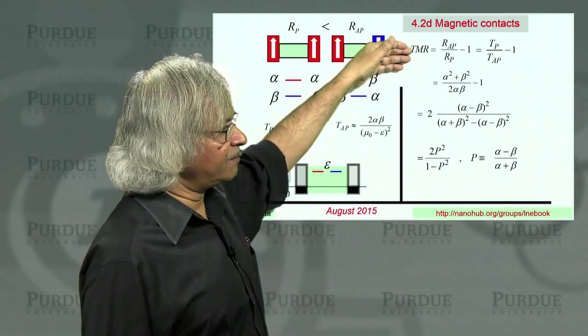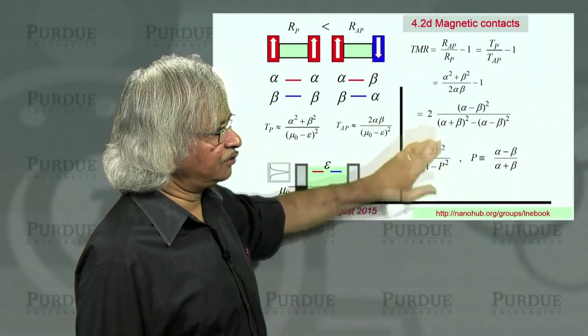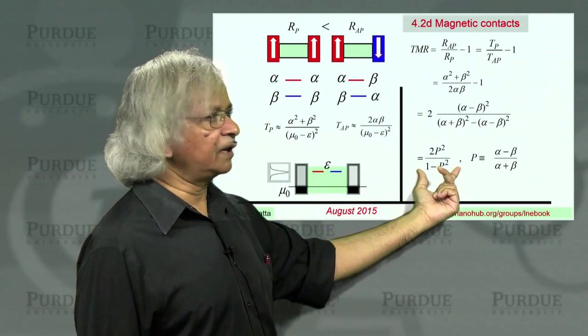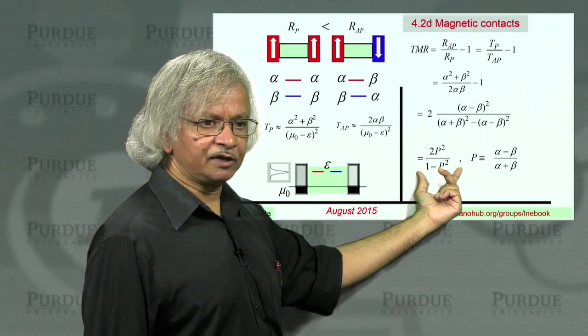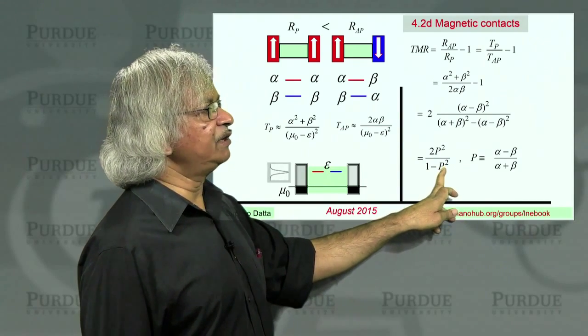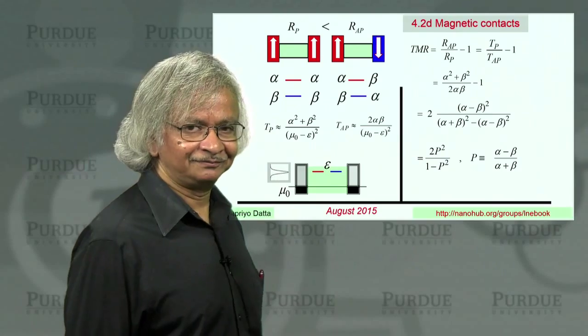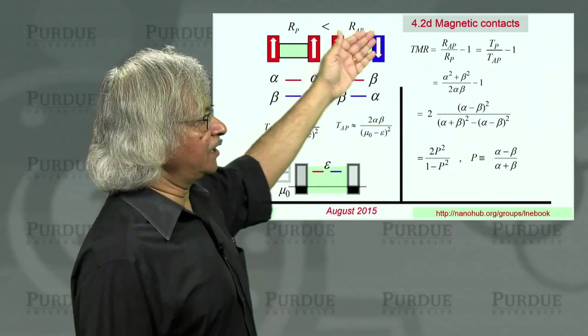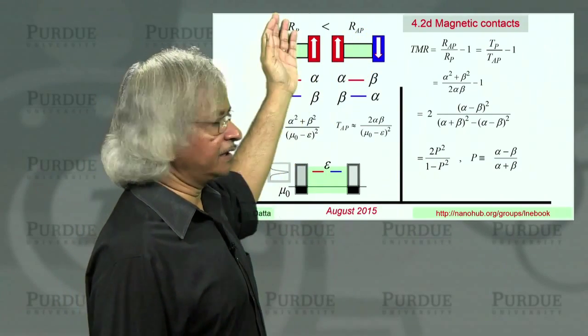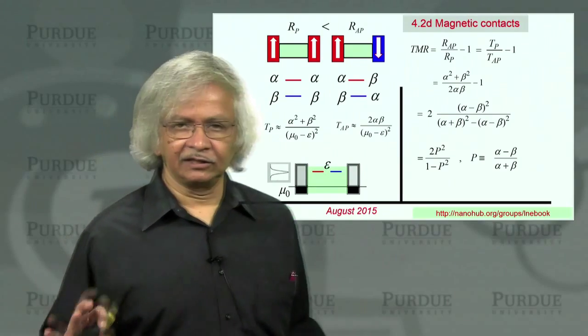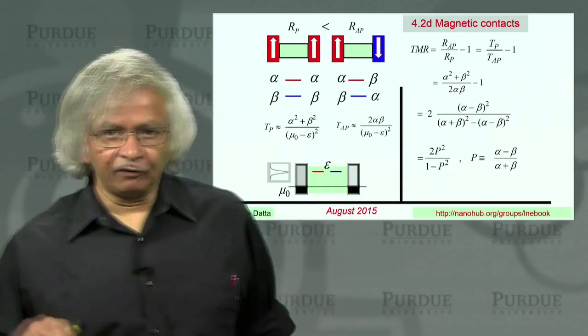At this time, usually, it's never that good, but over the years, the polarization, this p has improved significantly. And the way you relate the measured quantity, this TMR, to the p is this 2p squared over 1 minus p squared. And you can see, if p were 1, then actually you'd have an enormous TMR. That is, the RAP would be way bigger than the RP. And that's exactly what you want for applications.